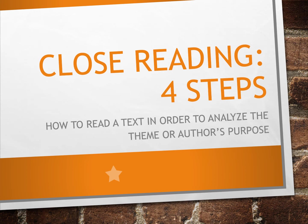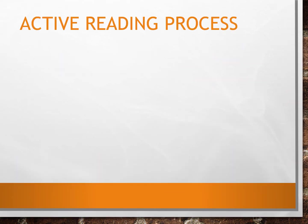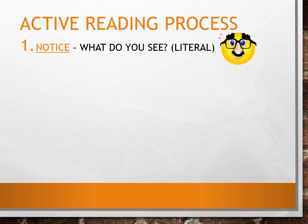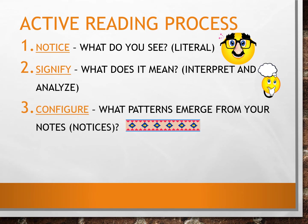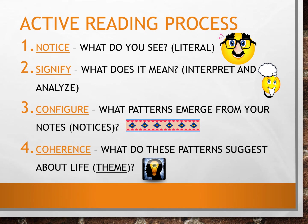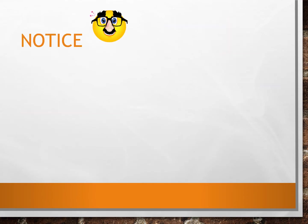Today we're going to look at the four steps for close reading. The active reading process consists of four steps: first, notice — literally what do you see on the paper, in the image, or on the screen. The next step is to signify and apply meaning to what you've already noticed. Third, configure your notices into patterns. And finally, create a coherence and figure out what exactly your notices are trying to tell you.